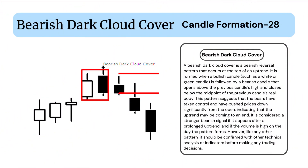A bearish dark cloud cover is a bearish reversal pattern that occurs at the top of an uptrend. It is formed when a bullish candle, such as a white or green candle, is followed by a bearish candle that opens above the previous candle's high and closes below the midpoint of the previous candle's real body.